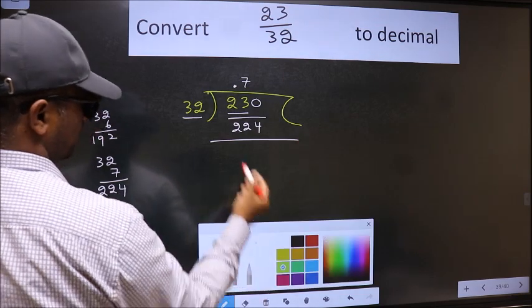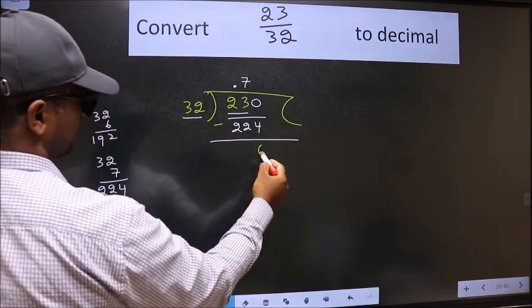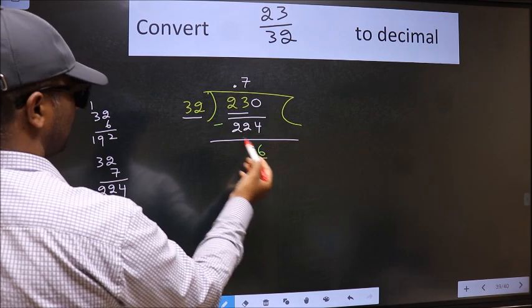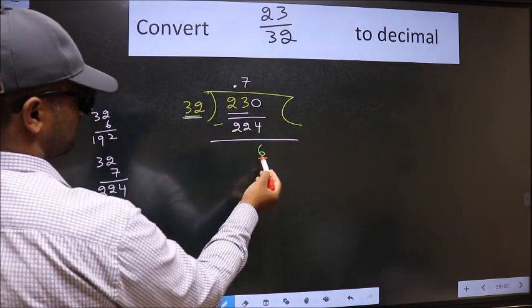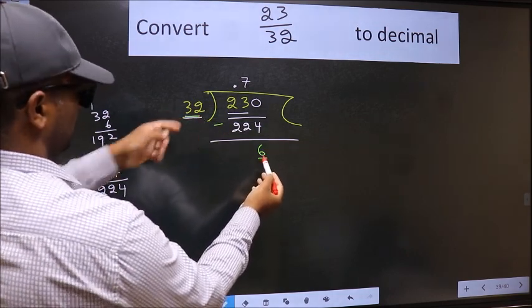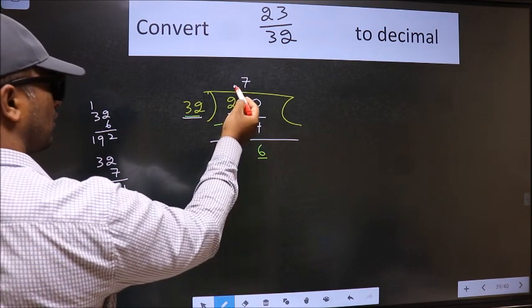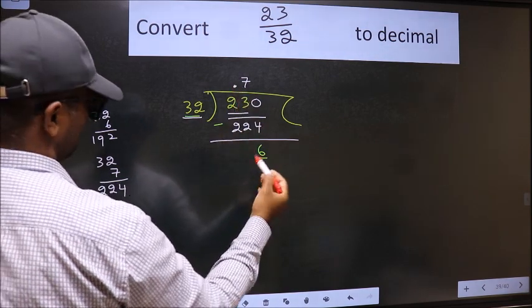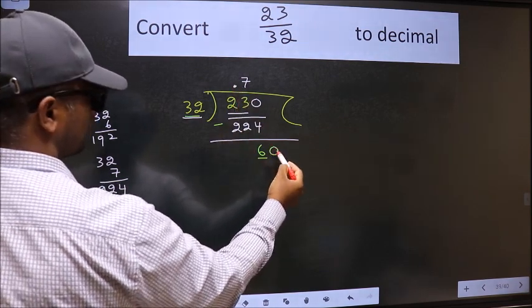224. Now we should subtract. We get 6. Now here we have 6 and here 32. 6 is smaller than 32, and we already have the decimal, so we can directly take 0 this time.